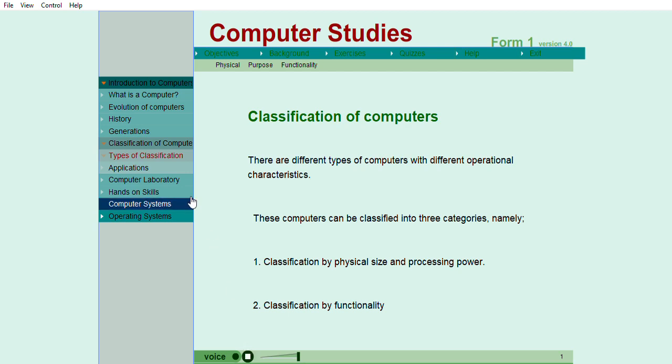Computers are available in different shapes, sizes, and weights. Due to these different shapes and sizes, they perform different sorts of jobs. A computer that is used in a home differs in size and shape from the computer being used in a hospital, and the classifications make it easy to identify the right computer to acquire for use in different places.